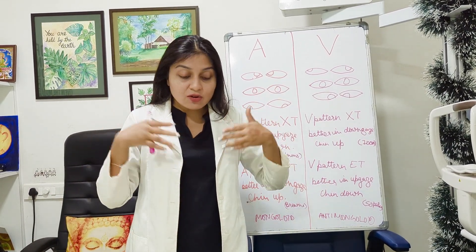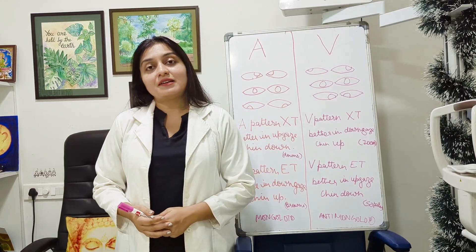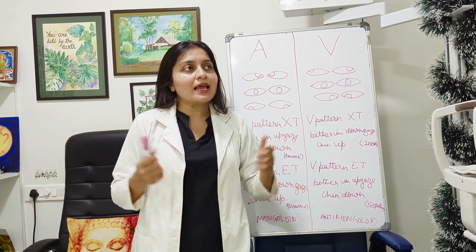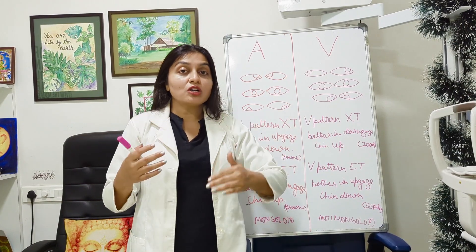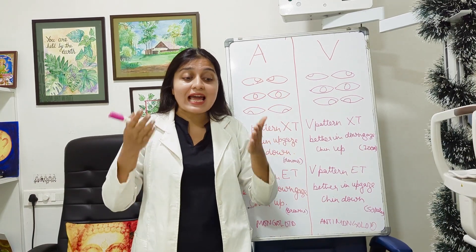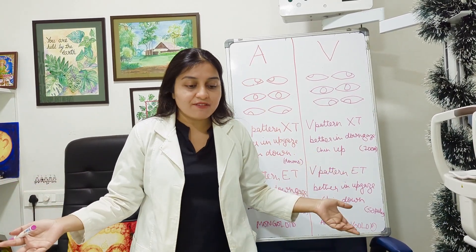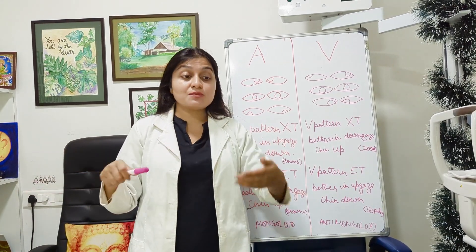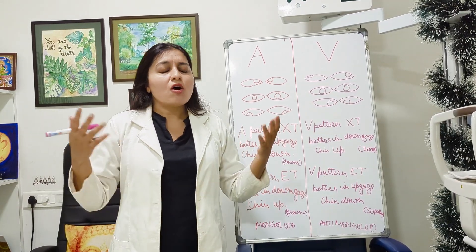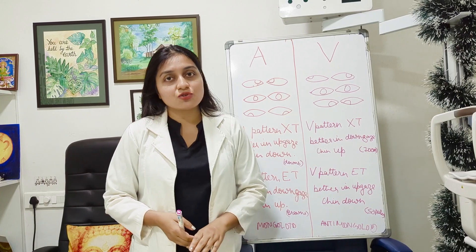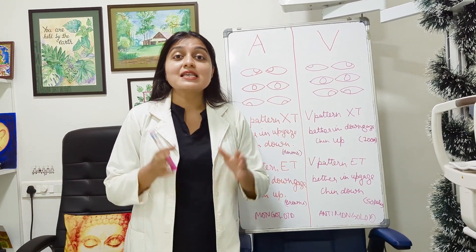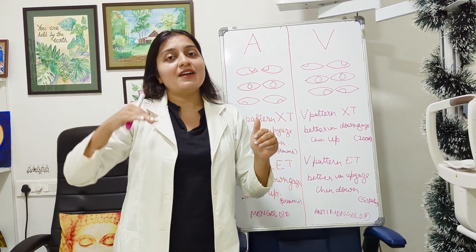Patients with superior oblique palsy have a lot of double vision when reading a book or going down steps because of V pattern esotropia. In primary gaze they may be completely normal, and the examining doctor might say there is nothing wrong. But because up gaze and down gaze have not been checked, the A and V patterns of the squint are missed. The patient is really having a problem going down steps or reading because they see double. So always check whether the squint is different when you look up versus when you look down.